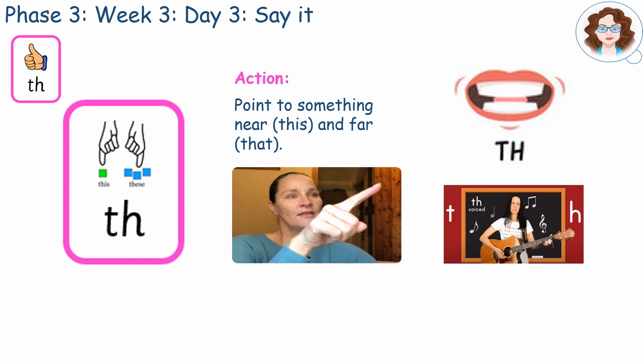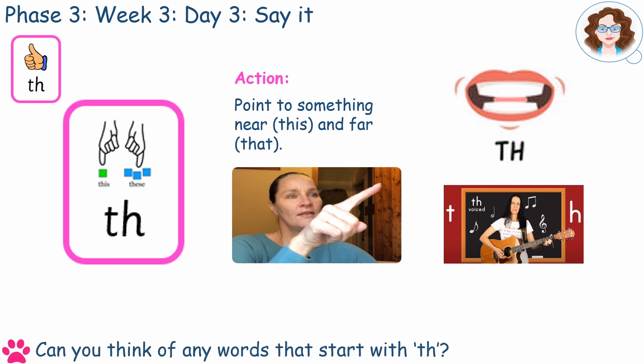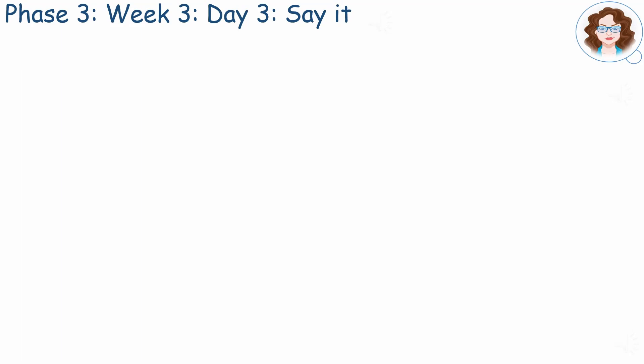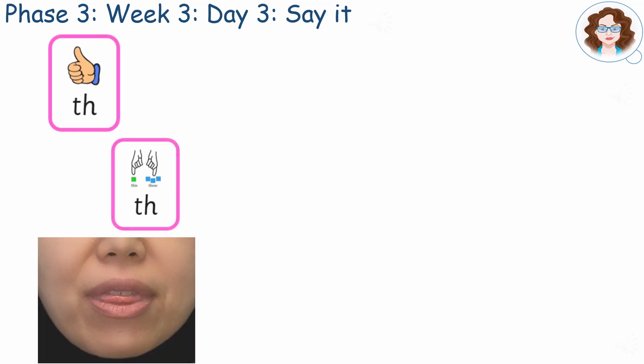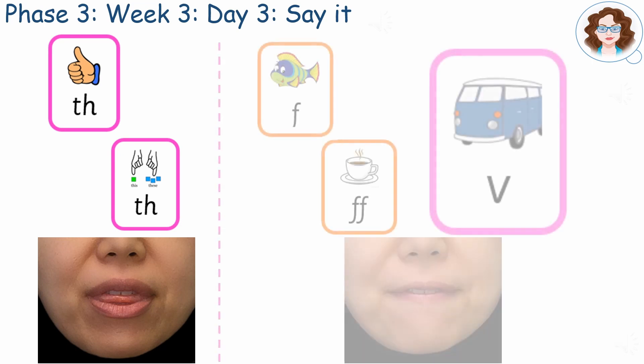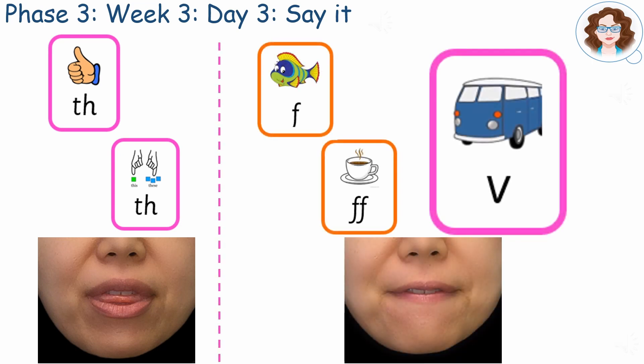Listen to the song to practise with. Can you think of any words that start with TH? I can — this and that. Remember to get your lips in the right position. Your tongue sticks out for the TH phoneme and your bottom lip is behind your teeth for the TH phoneme.